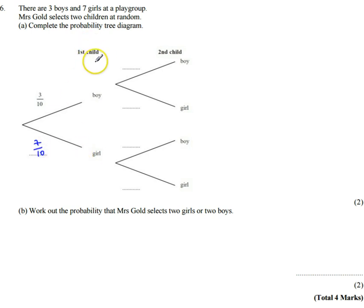After she's picked the first child, there's now going to be nine children left. So the rest of these probabilities are all going to be out of nine, they're all going to be something ninths.